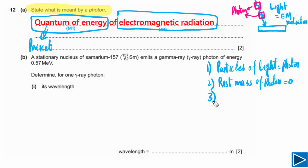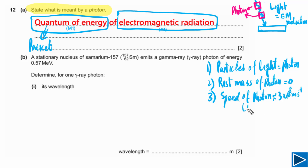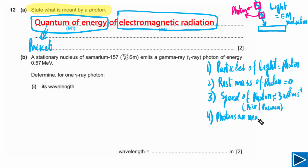The speed of photon is equal to the speed of light. In air or vacuum, that is about 3 × 10⁸ metres per second. Next, regarding charge: photons are neutral in nature — they have no charge.